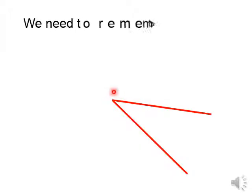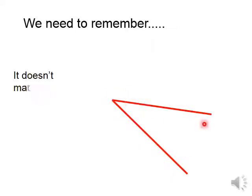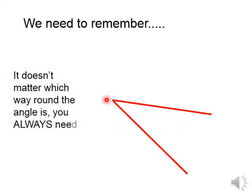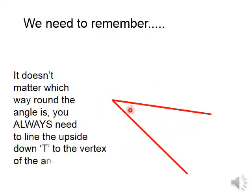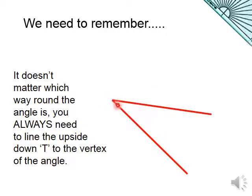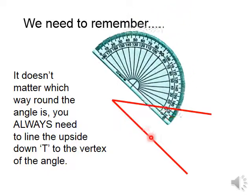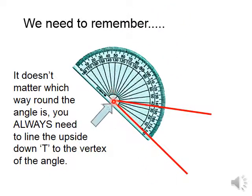If we have this shape of angle, similarly we put the protractor aligned with the side of the angle and the T-shape on the vertex. We put it like this.